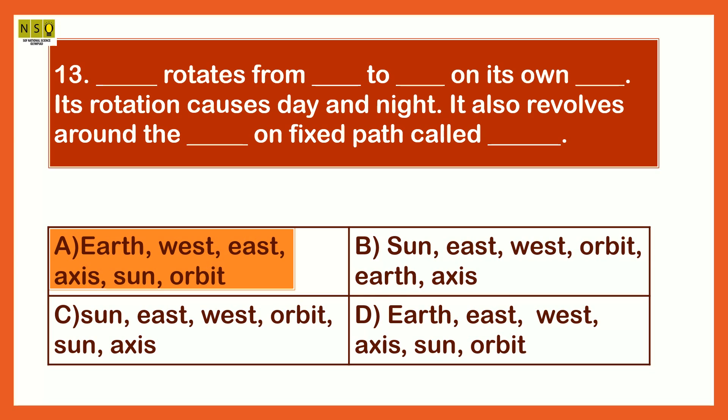Earth rotates from west to east on its own axis. Its rotation causes day and night. It also revolves around the sun on fixed path called orbit.